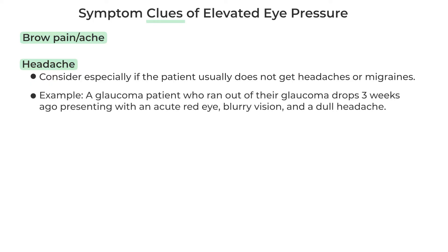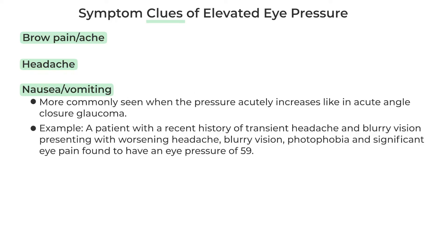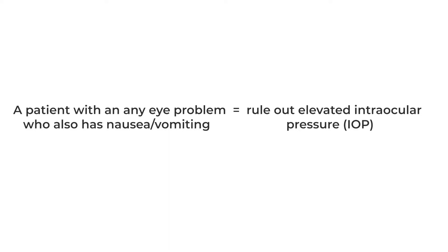An example: an acute red eye, blurry vision, and a dull headache in a glaucoma patient who ran out of their glaucoma drops three weeks ago. Nausea and vomiting are more commonly seen when the pressure acutely increases, like in acute angle closure glaucoma where the pressure can get pretty high. A rule of thumb: a patient with any eye problem who also has nausea or vomiting — rule out elevated intraocular pressure.